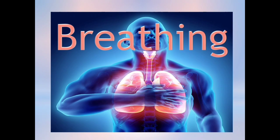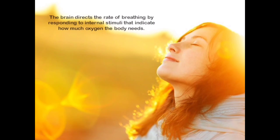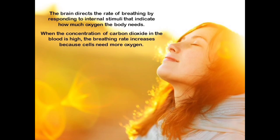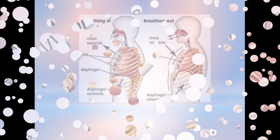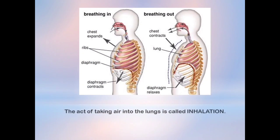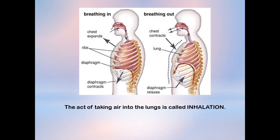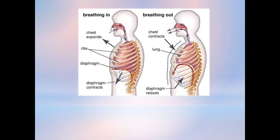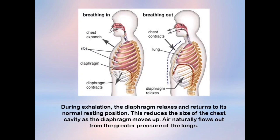Now let us discuss the breathing process. The brain directs the rate of breathing by responding to internal stimuli that indicate how much oxygen the body needs. When the concentration of carbon dioxide in the blood is high, the breathing rate increases because cells need more oxygen. The act of taking air into the lungs is called inhalation. During inhalation, as shown in the figure, the diaphragm contracts. This causes the chest cavity to expand as the diaphragm moves down, allowing air to move into the lungs. During exhalation, the diaphragm relaxes and returns to its normal resting position. This reduces the size of the chest cavity as the diaphragm moves up, and air naturally flows out from the greater pressure of the lungs.